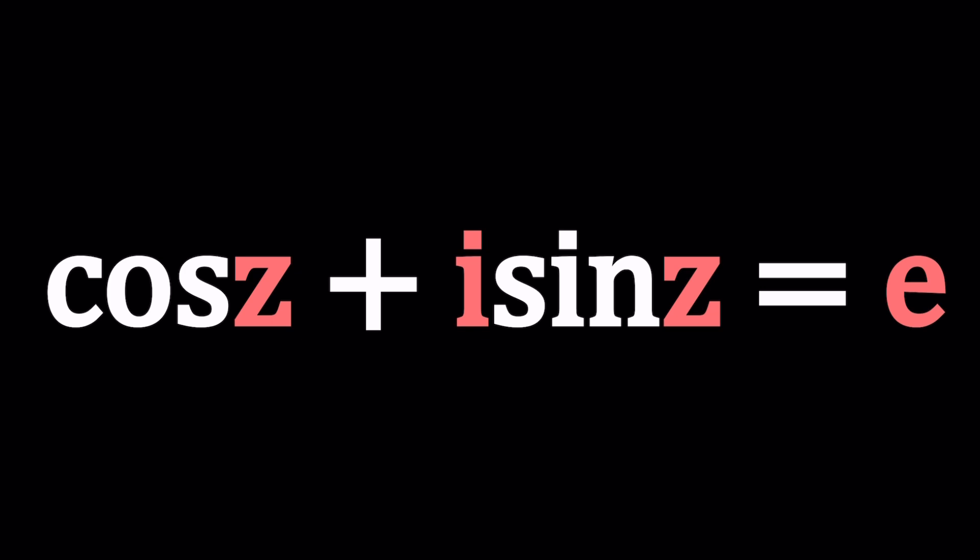We have cosine z plus i sine z equals e. e is Euler's number which is about 2.7. e comes up in a lot of different occasions such as limits, exponential growth, compound interest, so on and so forth.